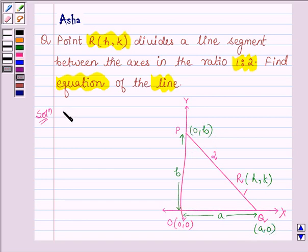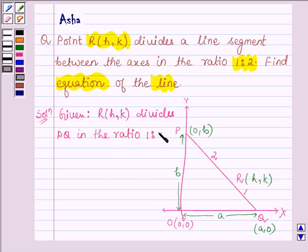We are given that point R divides line segment PQ in the ratio 1 is to 2. Now let us find the value of h and k with the help of section formula. h equals 2 times A plus 1 times 0 upon 3. This implies A equals 3h upon 2.